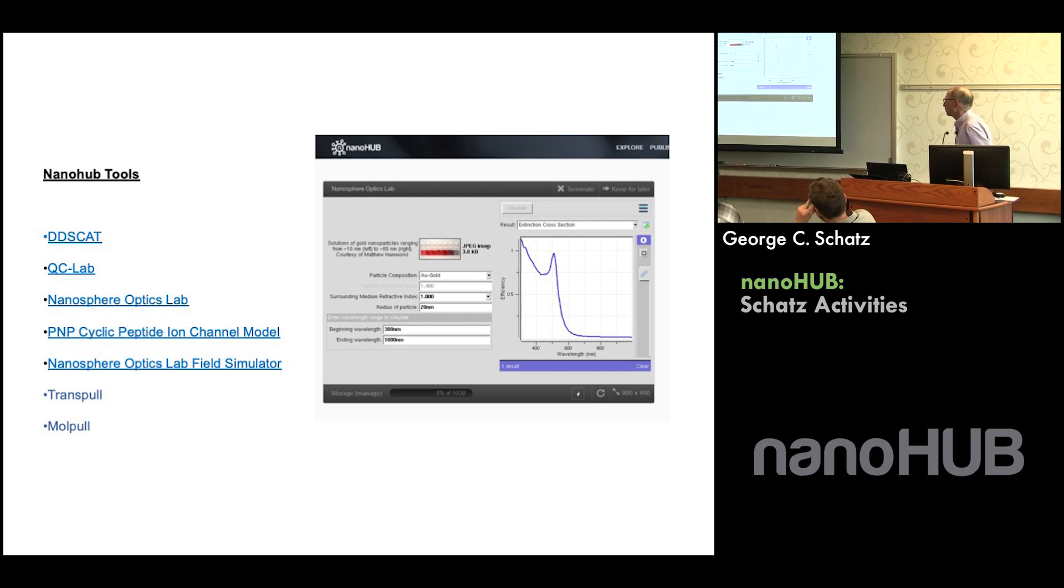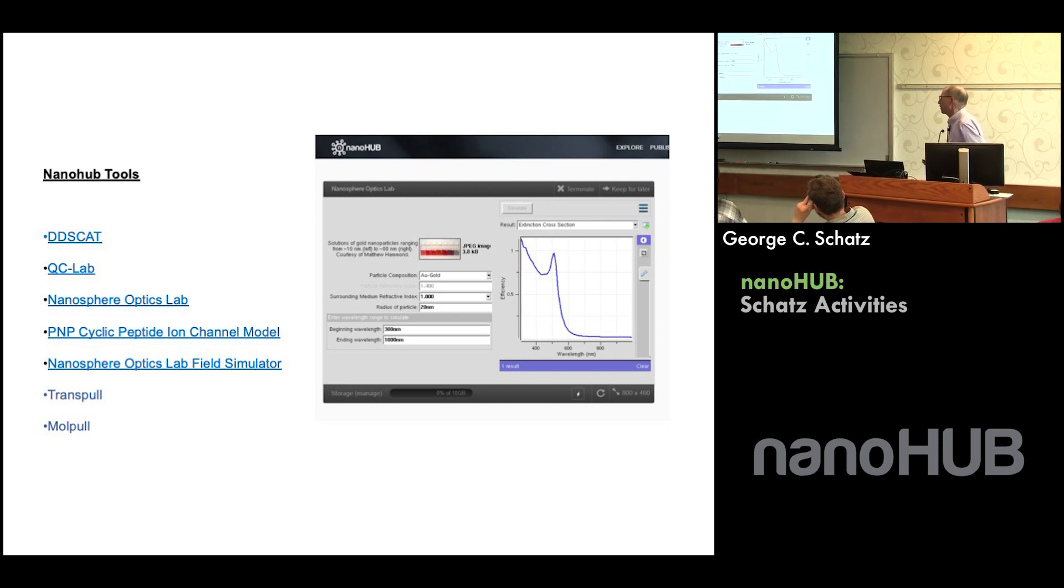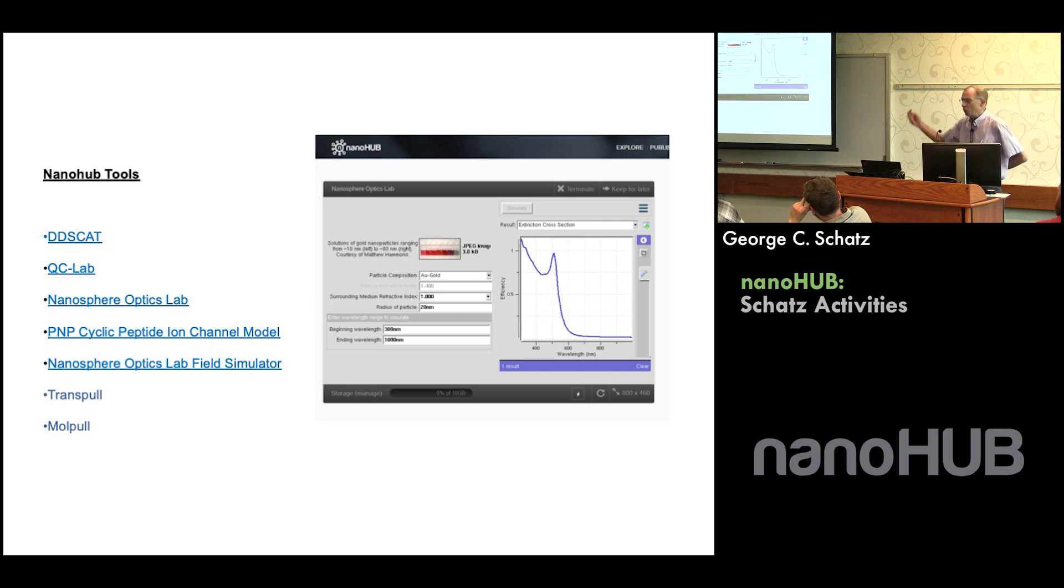So I said, okay, let's do that. Gold nanoparticle, you put in some, you have to decide what the medium around the particle is, what's the size of the particle, what's the wavelength range you want to study, and then you just click go. Actually, in the nanohub terminology it's always like simulate, and then eventually you get a spectrum.